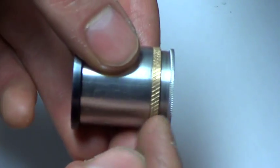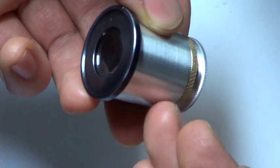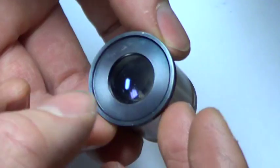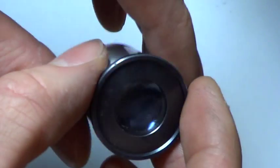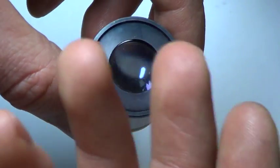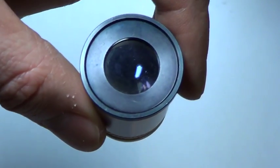So by threading this in and out, we can bring the crosshairs or the reticle to the focal point of the eyepiece. And then by moving the entire eyepiece in and out, we can bring that into focus with the main image.